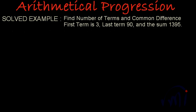Find the number of terms and common difference where first term is 3, last term is 90, and the sum is 1395.